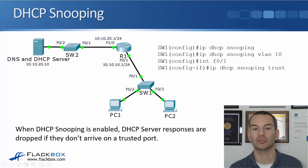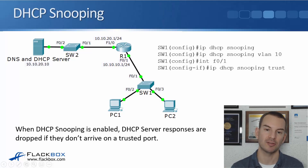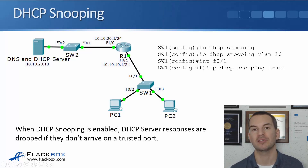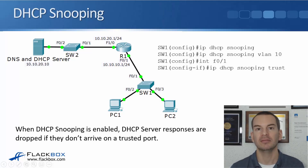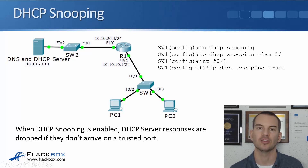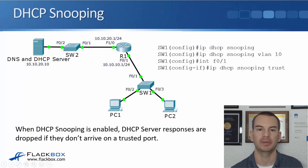We're trusting all the way through to our valid DHCP server. If somebody plugs in a rogue DHCP server on any other port, then the DHCP offers it gives out are going to be dropped by the switch — they're not going to reach the client, so clients won't receive that invalid information.